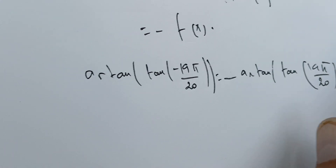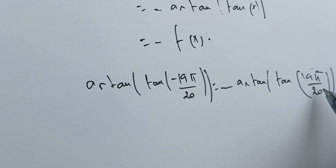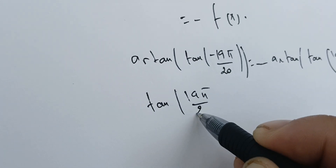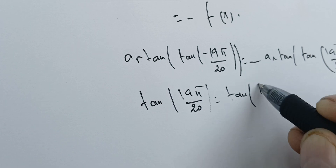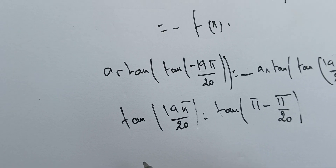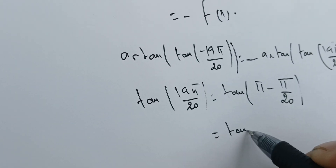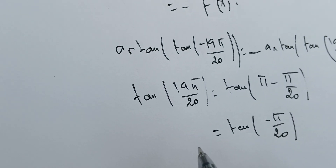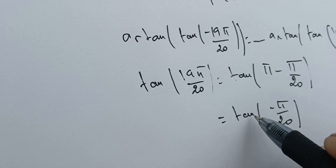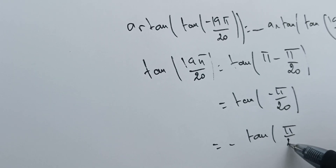This is the first step. Next, we need to have the argument in (-π/2, π/2). To do that, we note that tangent of 19π/20 equals tangent of (π - π/20). Since tangent is periodic with period π, this equals tangent of (-π/20). And since tangent is odd, we can take the minus outside, giving us tangent of π/20.